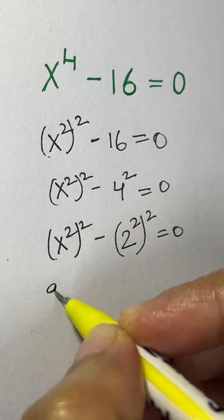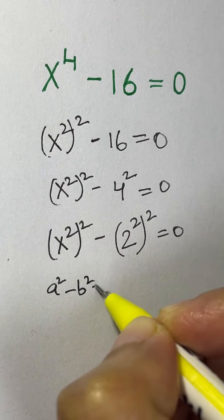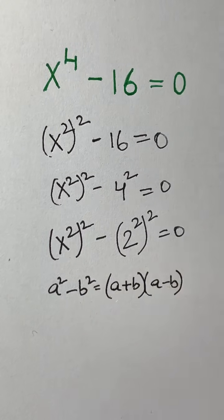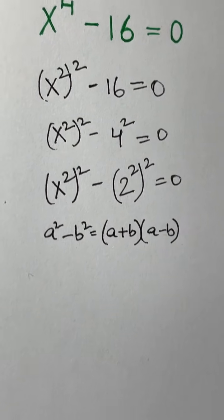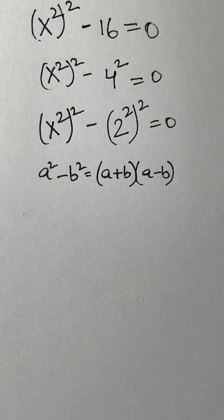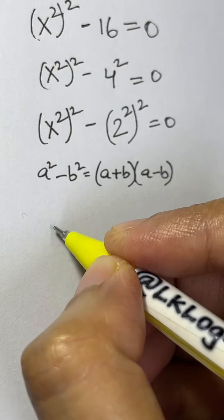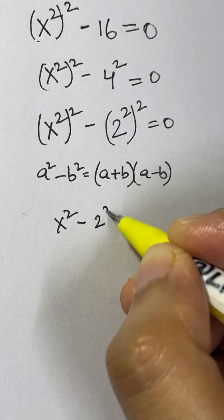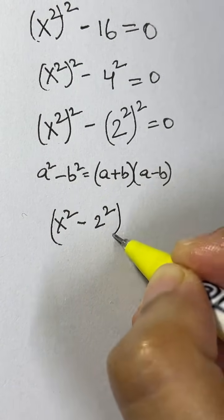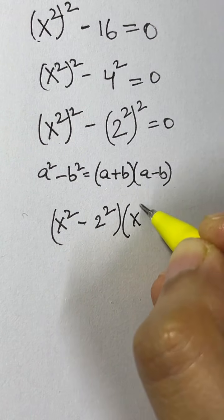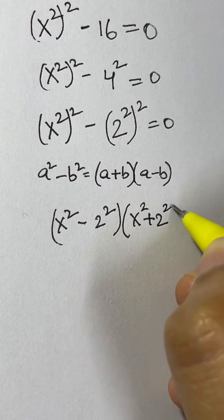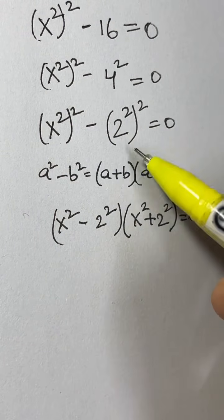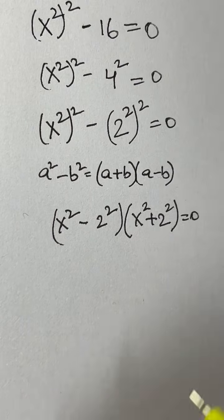Now this is in the form of the identity a² minus b², which equals (a + b)(a - b). Substituting, we get (x² - 2²)(x² + 2²) equals 0, where a is x² and b is 2².